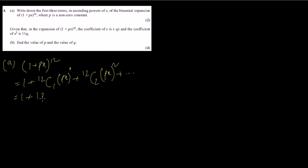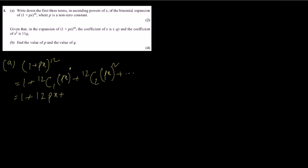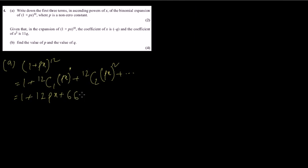Question number 4 is binomial series. We have to expand the first 3 terms of (1 plus px)^12. That is: 1 plus 12C1 times px plus 12C2 times (px)². 12C1 is 12, so we get 12px. For 12C2, using the calculator (the ncr button above division in orange): 12C2 is 66. So the expansion is 1 plus 12px plus 66p²x² plus dot dot dot.